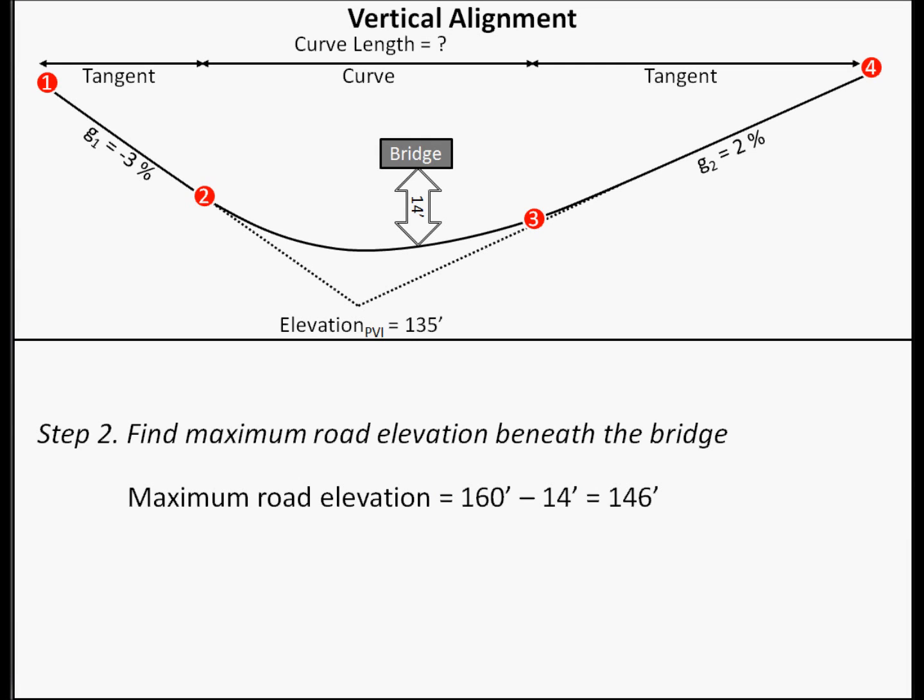Next, we need to specify the maximum road elevation beneath the bridge. We need to provide a 14 foot clearance underneath the 160 foot elevation bridge. Therefore, we have a maximum road elevation of 146 feet at the point underneath the bridge.